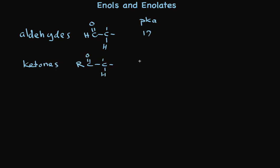For ketones, it's about 19. And for esters, it's typically about 24. So, we have about 17. Ketones are about 100 times less acidic. And esters are much less acidic than that. Two carbonyls are better than one.